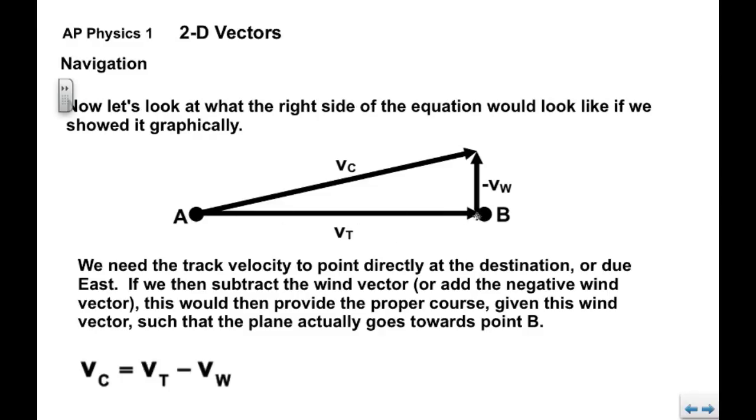So this is track minus wind. What I get is a course velocity that compensates for the wind. This would be the proper course. As a pilot, this would be the course I would set given the wind is coming from the north such that my plane would actually fly towards point B.